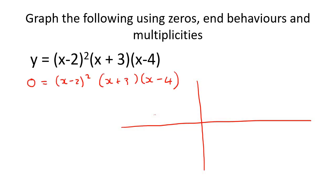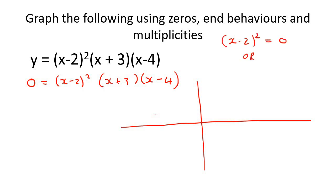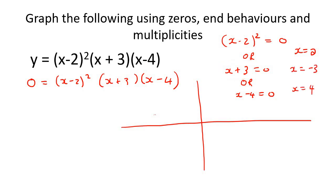When you have the brackets, you can make each bracket equal to zero. So x minus 2 squared equals zero, or x plus 3 equals zero, or x minus 4 equals zero. Solving those gives x = 2, x = -3, and x = 4. Those are the zeros on our graph.